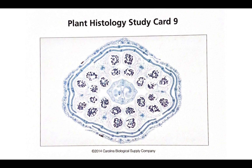Again, they want to try to throw you for a loop and give you a magnified cross section. If you count the petals here, that should help determine which type of cotyledon this is.